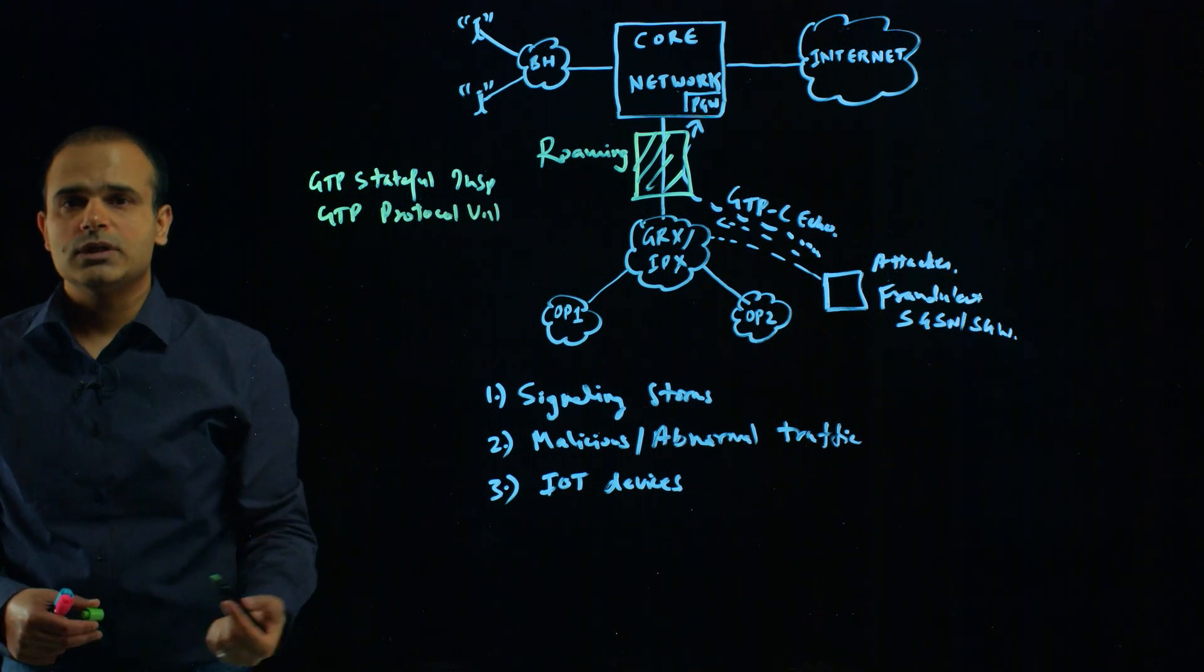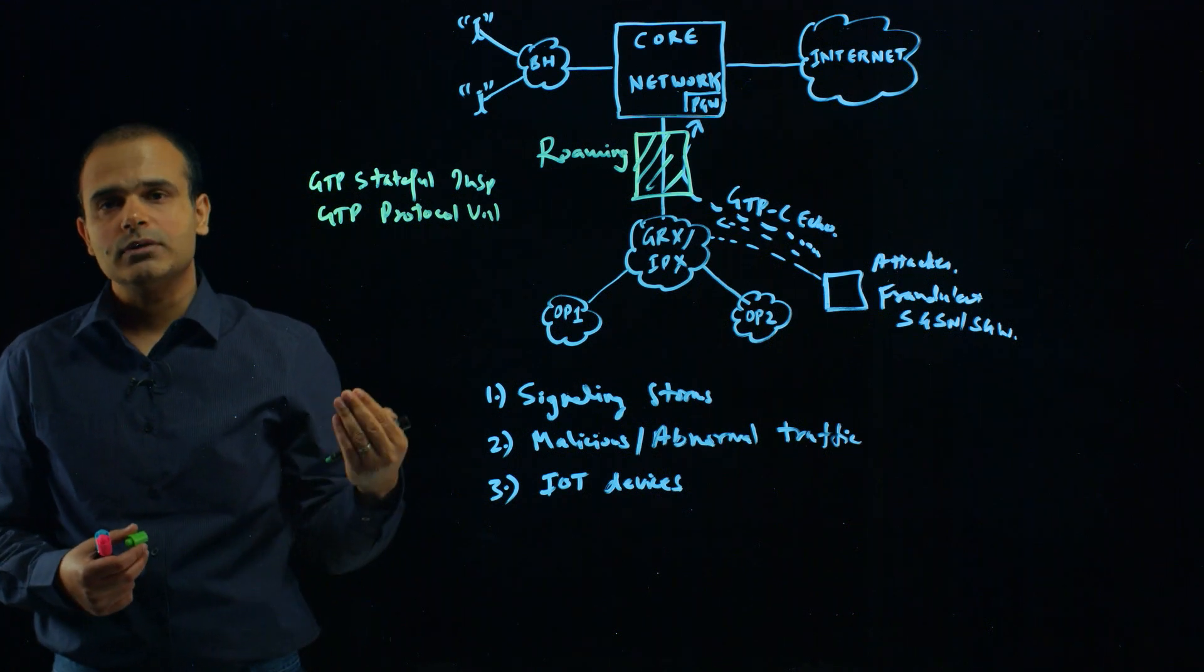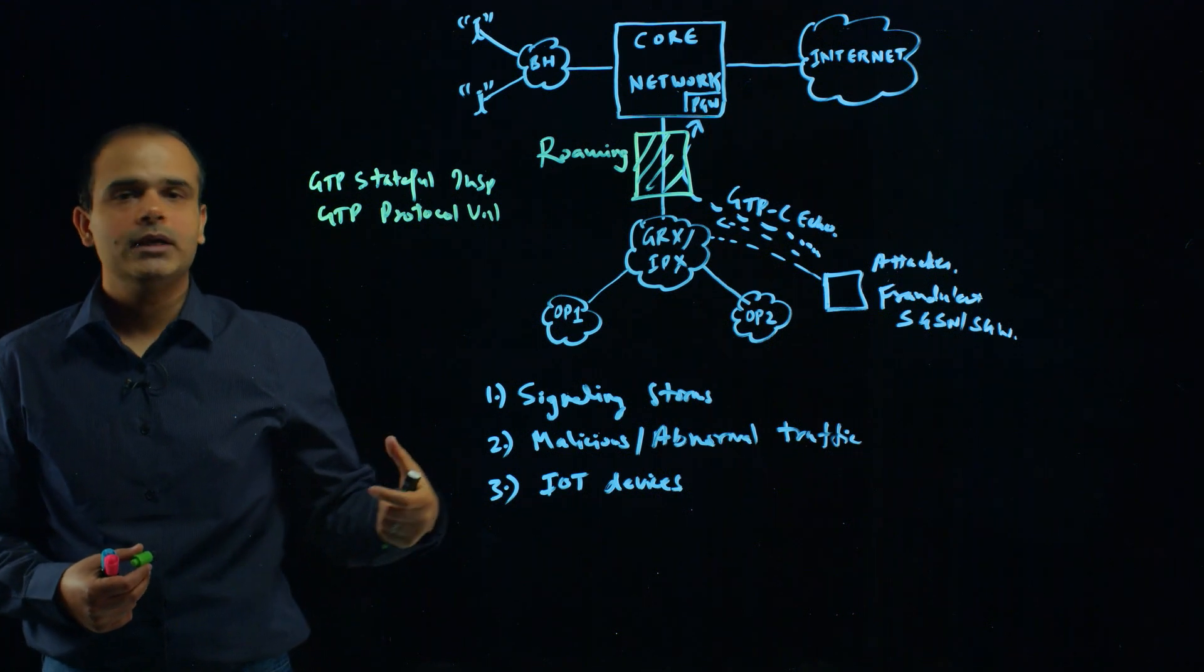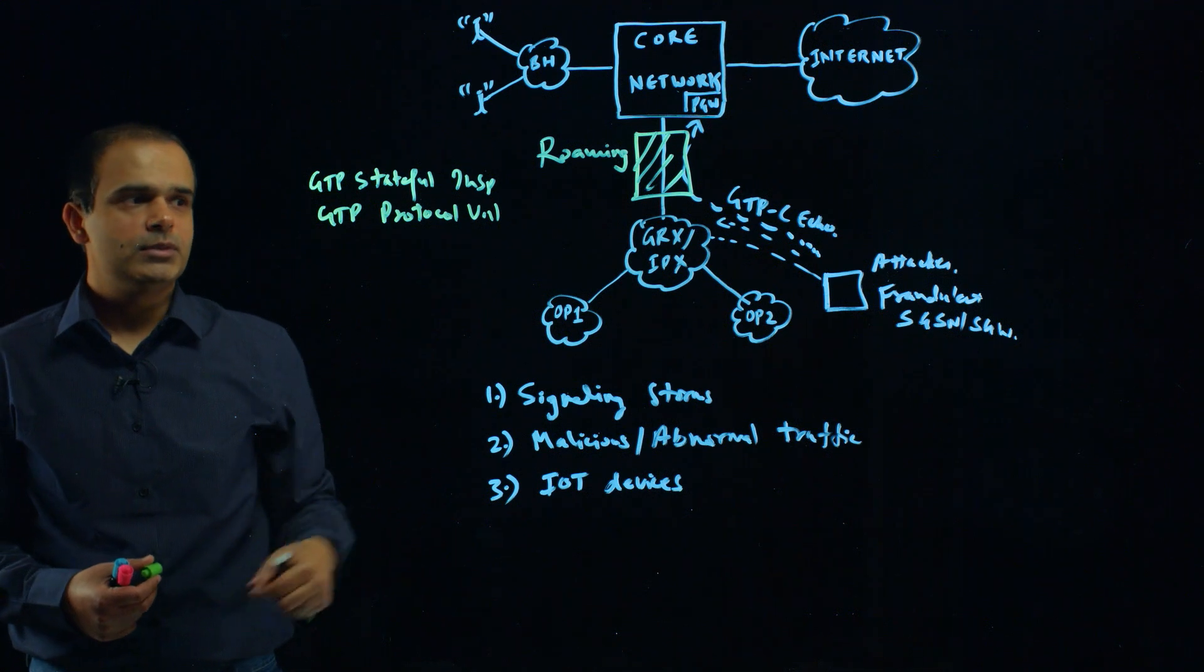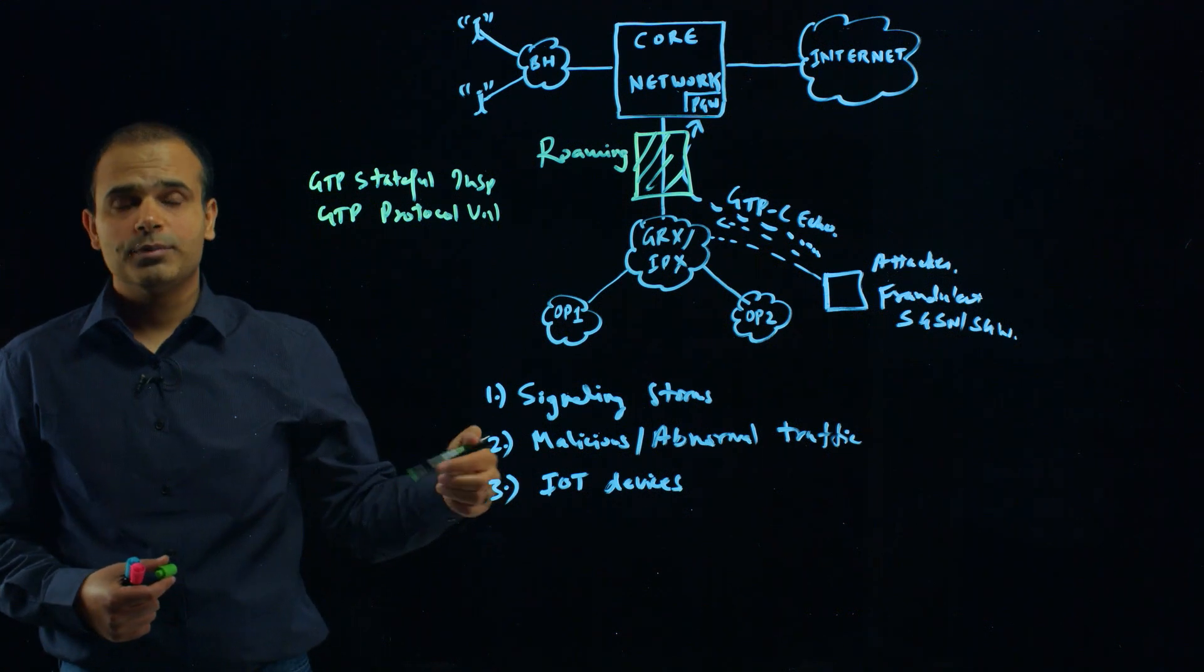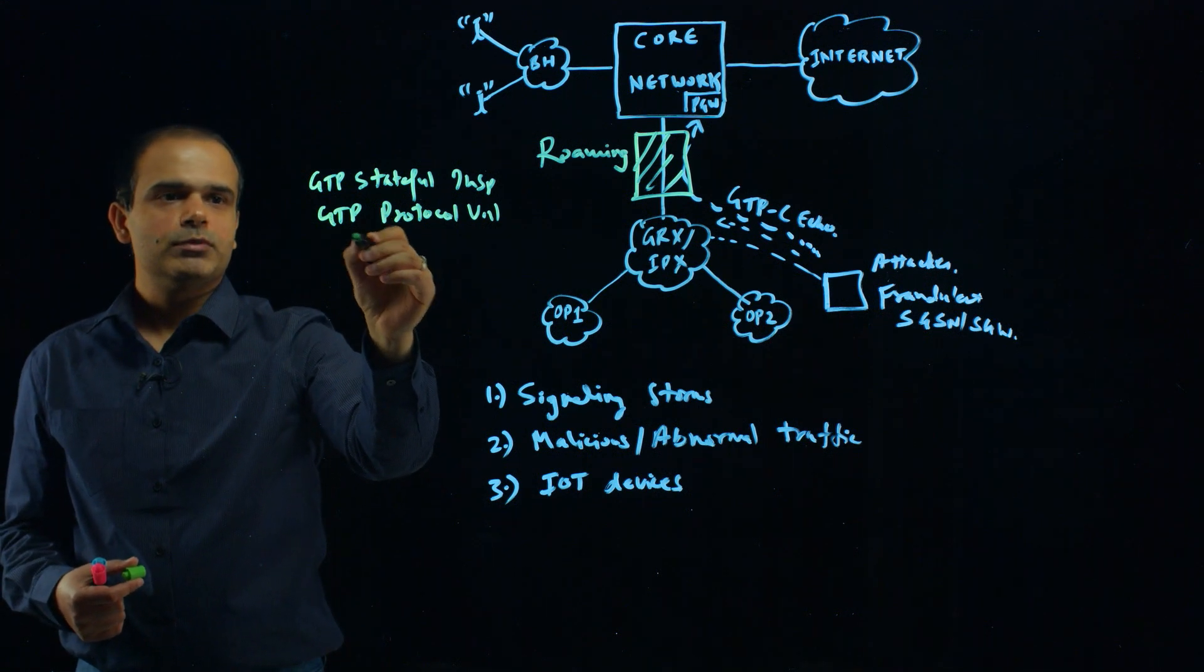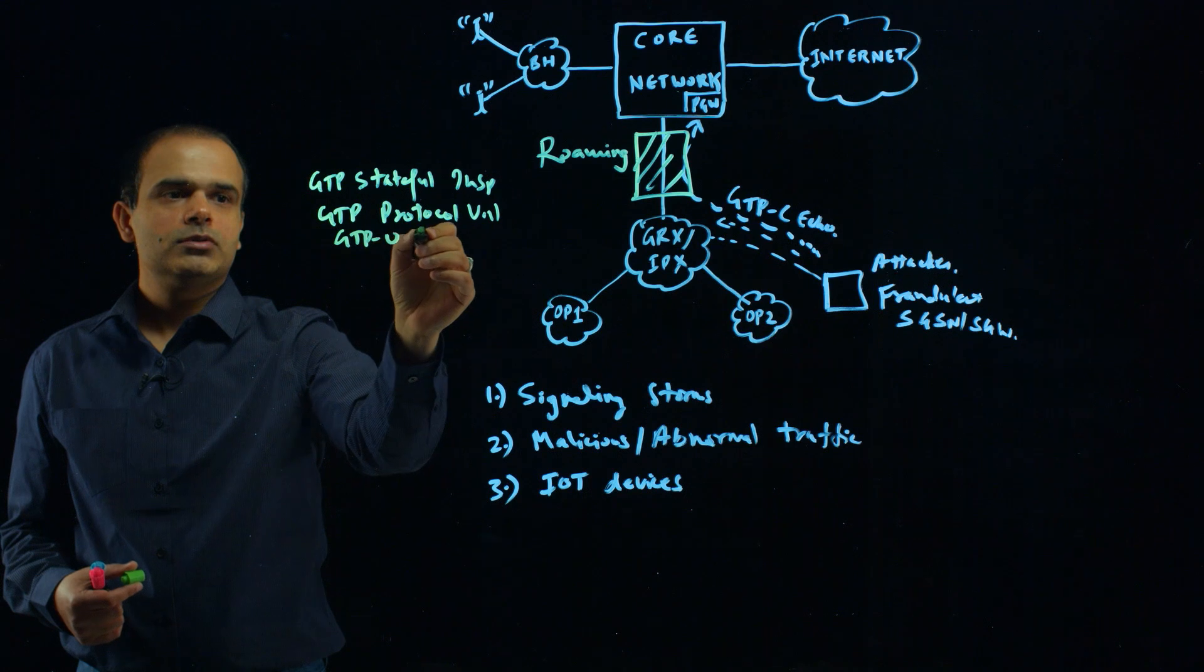This is more of a static check where we can look inside the header and payload and apply detection and prevention capabilities on the GTP control and user traffic coming from your roaming partners. The third capability is GTPU content inspection.